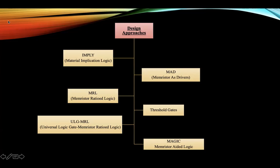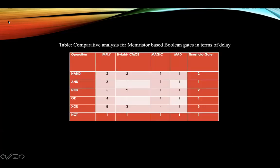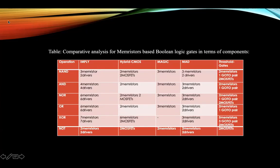This table gives the comparative analysis for Memristor-based Boolean gates in terms of delay. It is clearly evident that the MAD gate provides better latency or throughput than the other approaches. This next table is the comparative analysis for Memristor-based logic gates in terms of their components. Here also, the MAD gate provides improved complexity compared to the IMPLY logics, but needs more components for OR and AND operations compared to hybrid CMOS designs, though fewer for other gates.